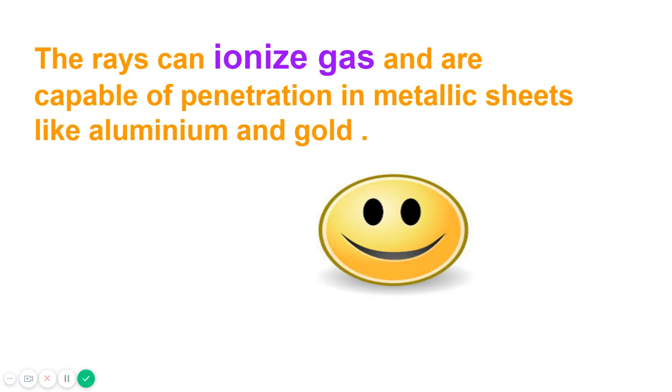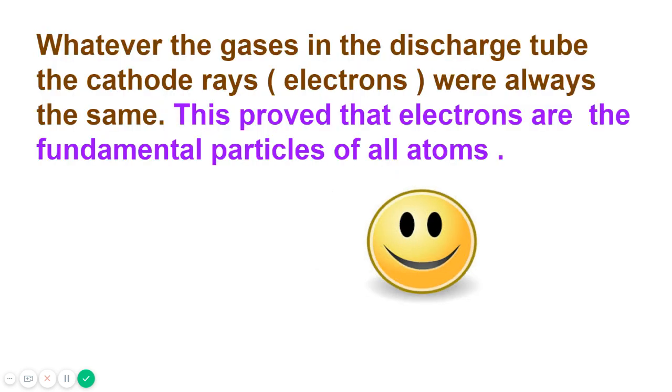Whatever the gases in the discharge tube, the cathode rays—that is, electrons—were always the same. This proved that electrons are the fundamental particles of all atoms. So this was how electrons were discovered by JJ Thompson.